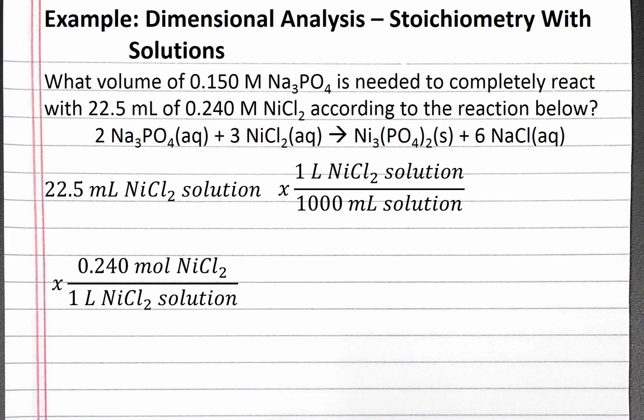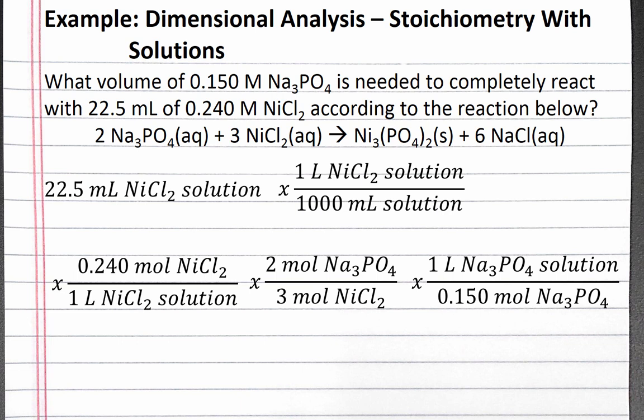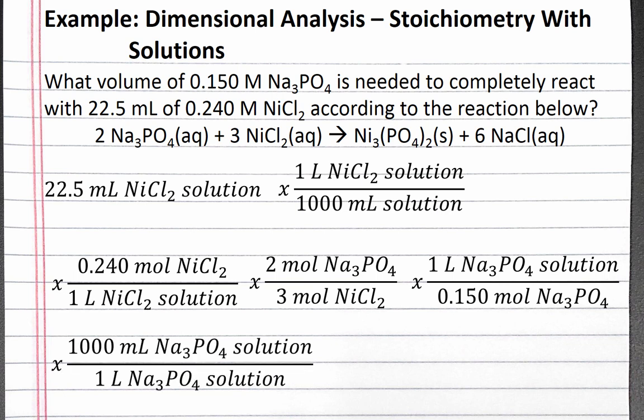Then we can use the coefficients from the balanced chemical equation to convert from moles of nickel chloride to moles of sodium phosphate. We'll use the concentration of sodium phosphate to convert from moles of solute to liters of sodium phosphate solution. And then we can convert back to milliliters of solution.